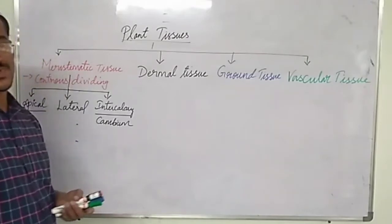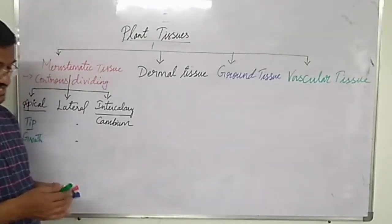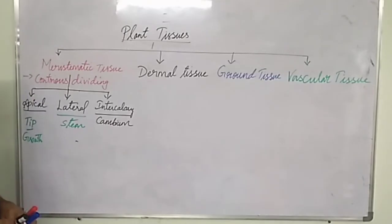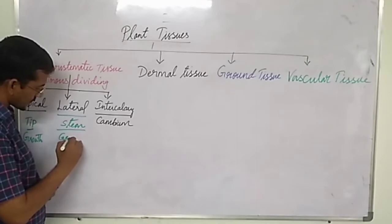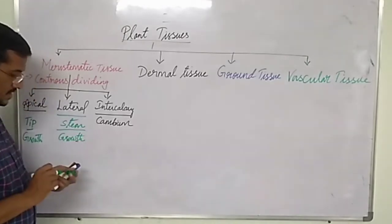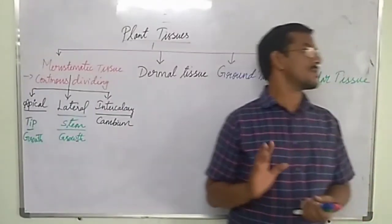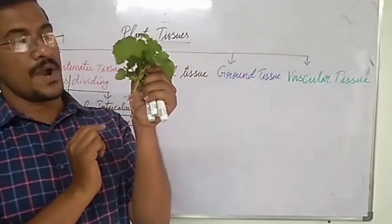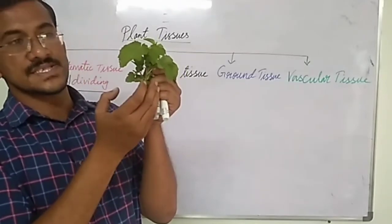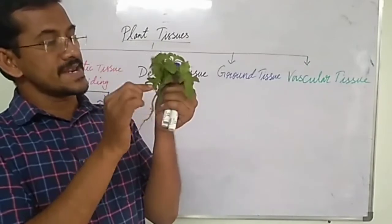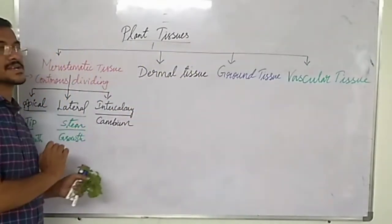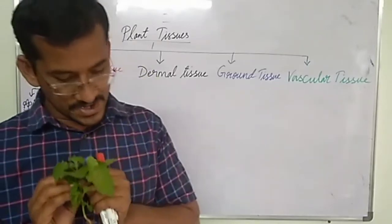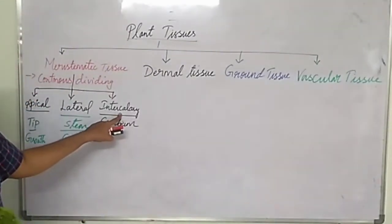Lateral meristematic tissue is present on the lateral sides of the stem — that is, around the edges of the stem. Its function is to help in the overall growth of the stem. On the lateral sides at the edges of the stem, this tissue is present.